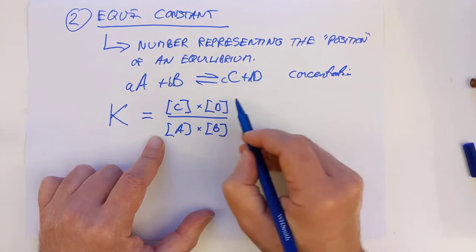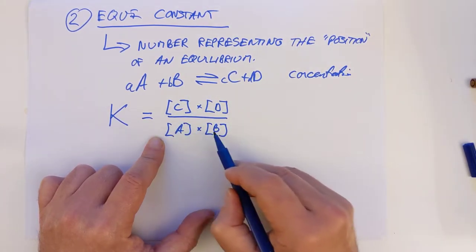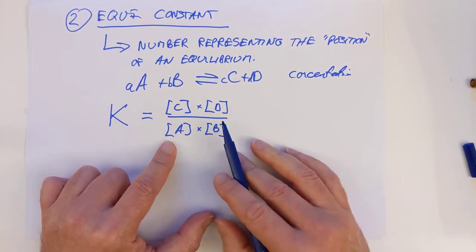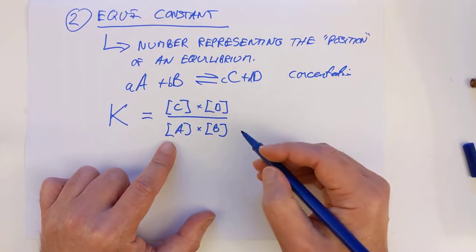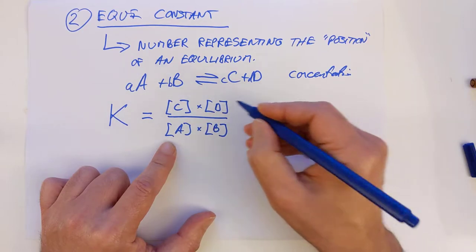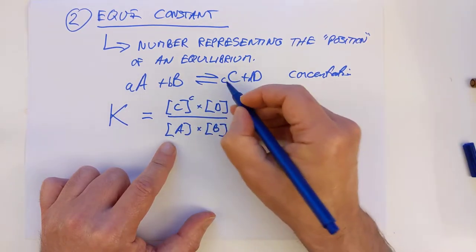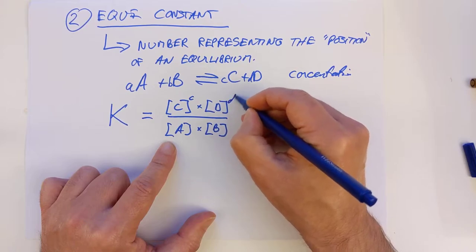The letter that we use for equilibrium constants is K. Sometimes gets a little suffix for important equilibria, but in general terms we just call them Ks. And we calculate it using the following: it's a ratio of everything on the right, which goes on the top, divided by everything on the left, which goes on the bottom. So what we want is the concentration of C times the concentration of D over the concentration of A times the concentration of B.